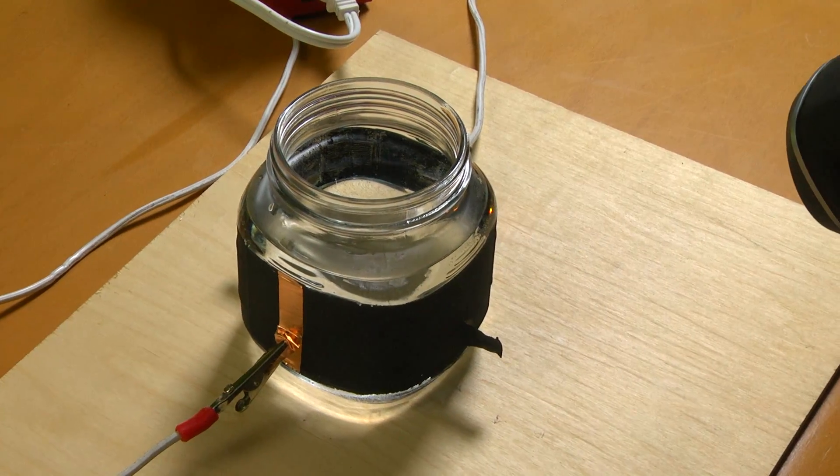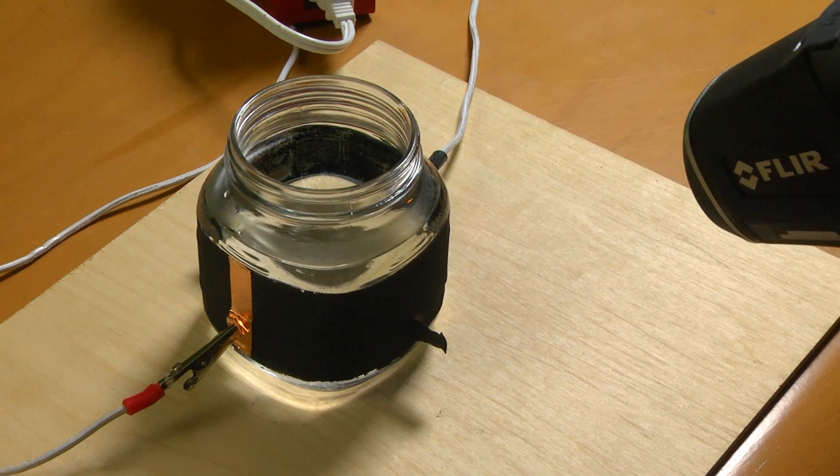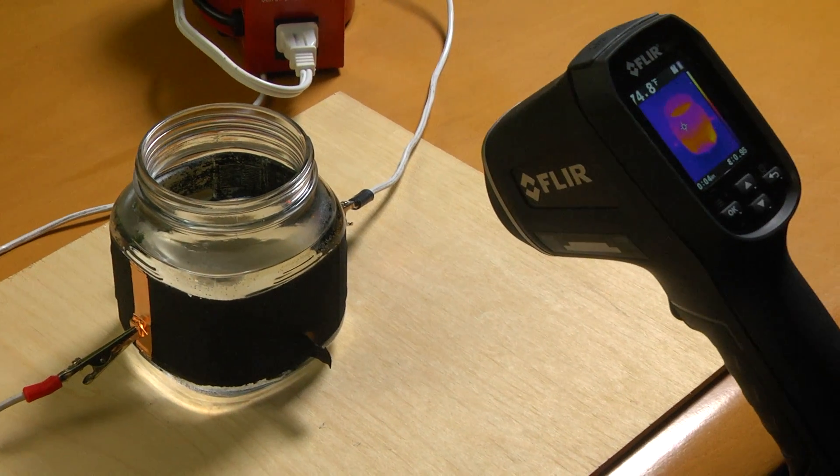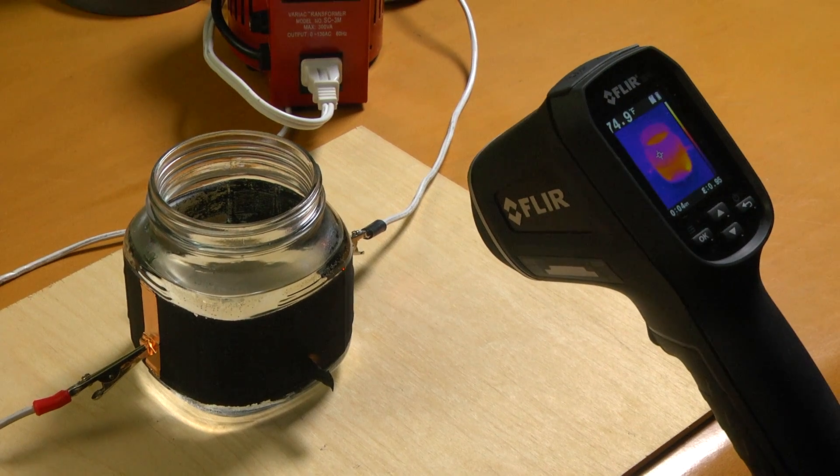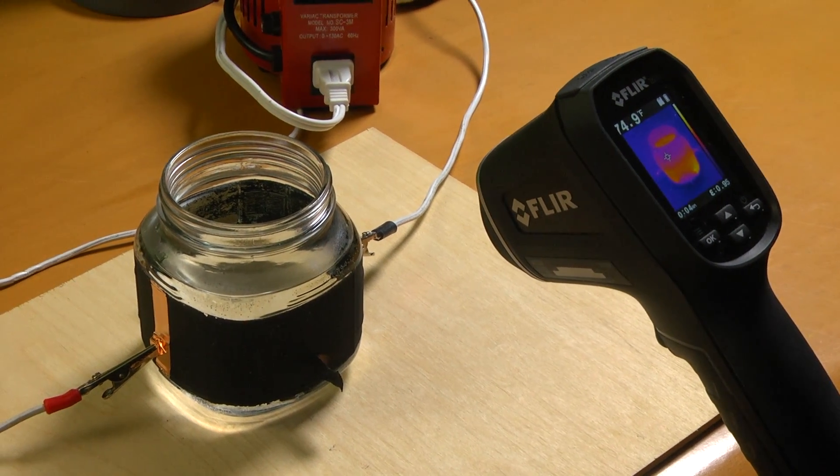To demonstrate its abilities to adhere to smooth surfaces, Thermal Coat was sprayed on this glass jar. Water has been added to illustrate how effective Thermal Coat is at generating heat.